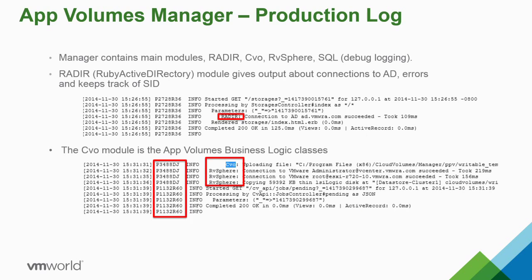App Volumes uses Nginx as the web server and Ruby for development. There's a Ruby Active Directory library, the CVO module containing all back-end business logic, and vSphere and SQL modules. You'll see these module names like CVO and vSphere as prefixes in the production log. When troubleshooting, look for those keywords to identify which module is involved. Since App Volumes uses standard Ruby libraries, you can often find helpful information on Google when parsing through error messages in the logs.